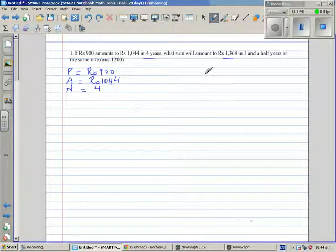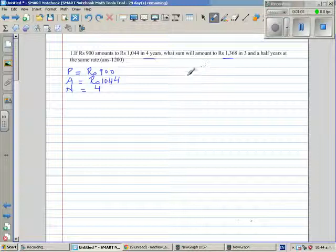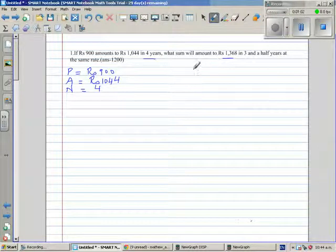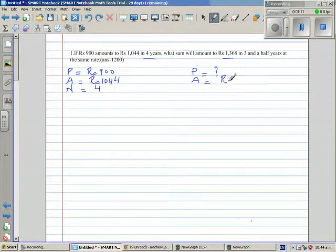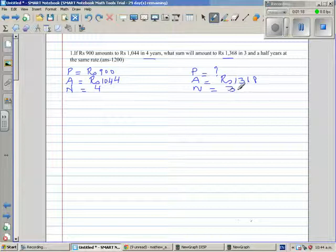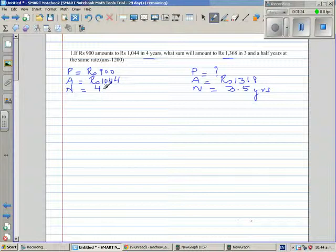Okay, the second situation is we want to find the principle, that's what the question is. We want to find what principle will amount to 1,368 rupees. And the number of years is 3 and a half years, that is 3.5 years. So this is the whole question.